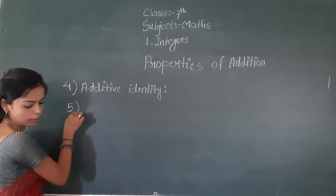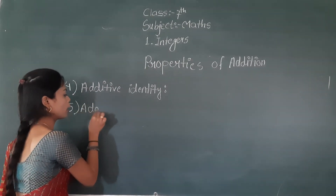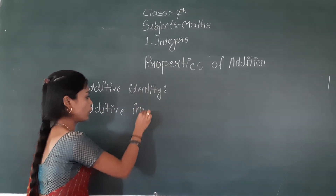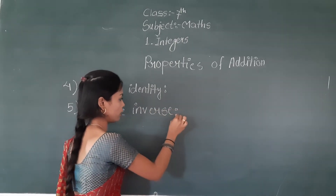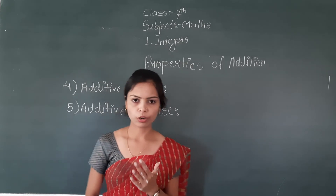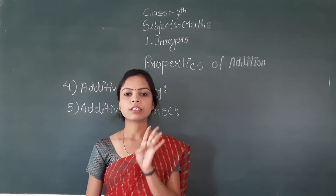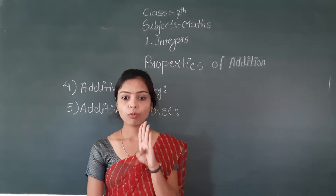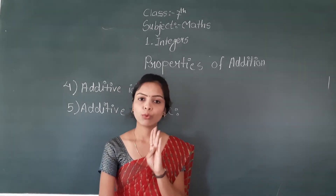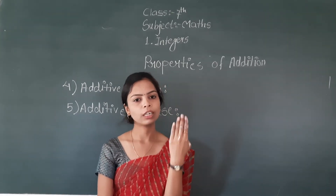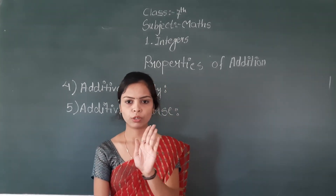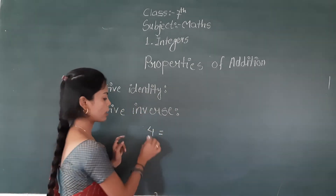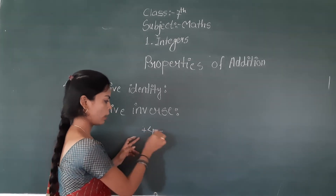The fifth property is additive inverse. What is additive inverse? If your integer is four, what is the additive inverse of four? The additive inverse of a positive integer is negative, and the additive inverse of a negative integer is positive. So the additive inverse of four is minus four.